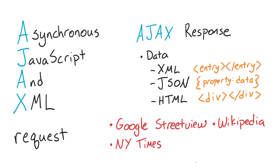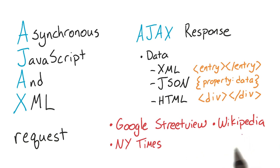As part of the project for this course, you'll have to try three different asynchronous request techniques. You'll have to work with the Google Street View, Wikipedia, and the New York Times APIs, all three of which work very differently.